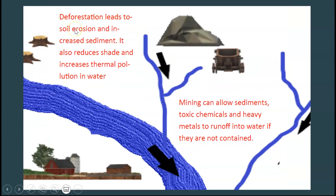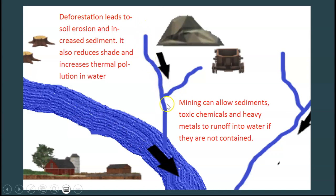First up, let's talk about deforestation. You can draw some arrows down into the water. When you cut down trees you're going to have sediment pollution and thermal pollution because of a reduced amount of shade. Draw arrows to show the direction of the flow of water as well. These are streams that go into a river and we call them tributaries — streams that go into a river are tributaries of that river.